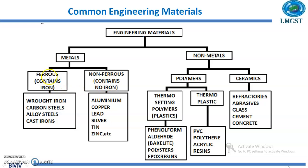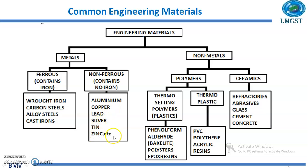The ferrous metals are again classified as wrought iron, carbon steels, alloy steels, and cast iron. And the non-ferrous metals are aluminium, copper, lead, silver, tin, zinc, etc.